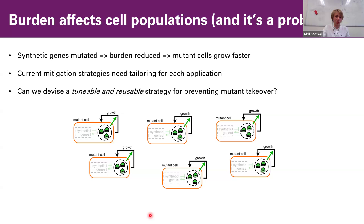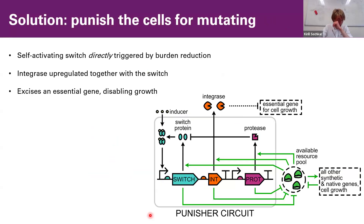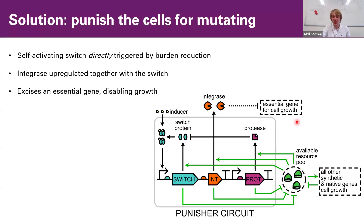We could really benefit from a strategy that would be tunable and reusable across different applications with minimal changes. To this end, we propose a Punisher circuit, which primarily consists of a switch gene which upon chemical induction can act as a transcription activating factor that promotes its own synthesis. Co-expressed with it is an integrase, which when it reaches a sufficient concentration can excise from the cell's genome or from a plasmid an essential gene for cell growth, thereby disabling that essential gene expression. We also have a protease which degrades the switch protein to tune the dynamics of this circuit. Importantly, the expression of all these genes is naturally dependent on the availability of ribosomes in the cell.